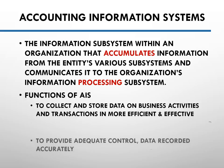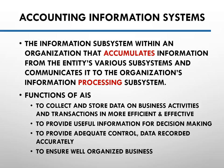The accounting information system is basically a subsystem that accumulates information from various subsystems and communicates them to the processing subsystem. Its functions are to collect and store data of business activities, provide useful information for decision making, and provide adequate control over the management of the company, ensuring data is recorded accurately and the organization is well organized.